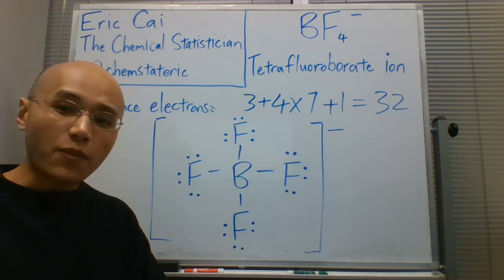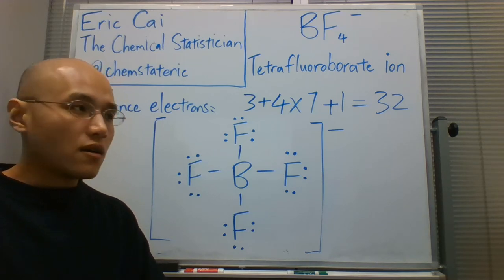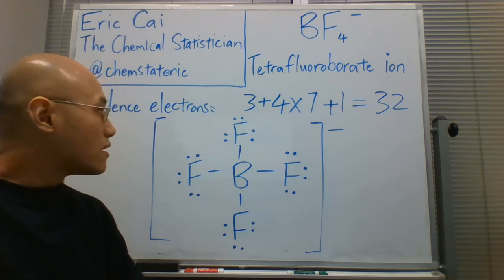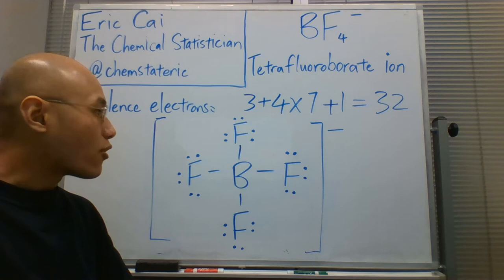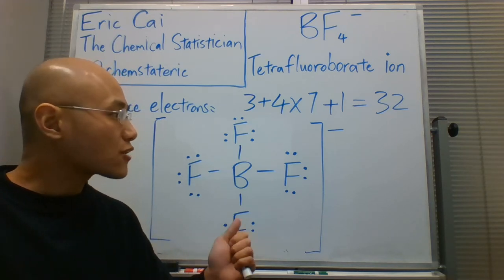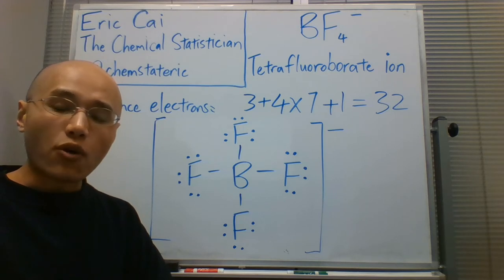So, given the opportunity, boron trifluoride will add another fluorine to it to form the tetrafluoroborate ion. So this is actually more stable than boron trifluoride.